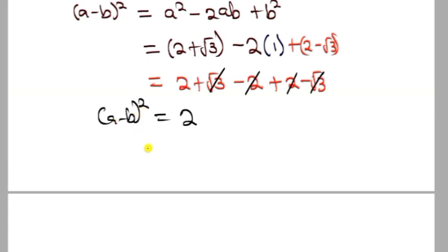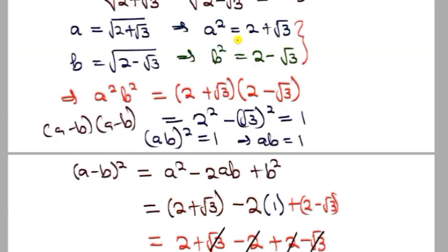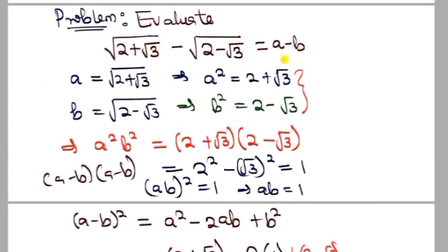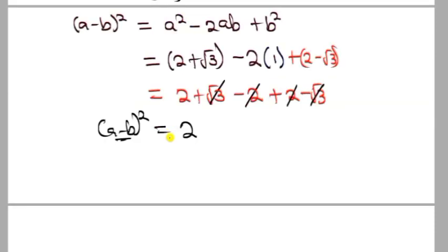Since (a - b)² = 2, and we need a - b, we take the square root: a - b = √2. This is the solution to our problem.